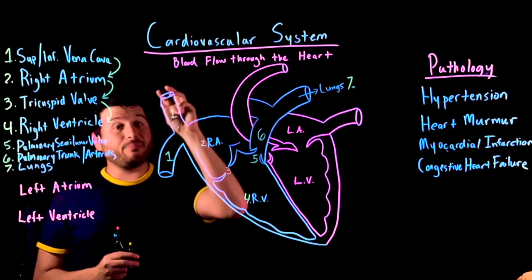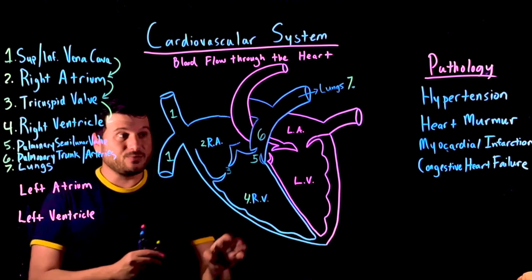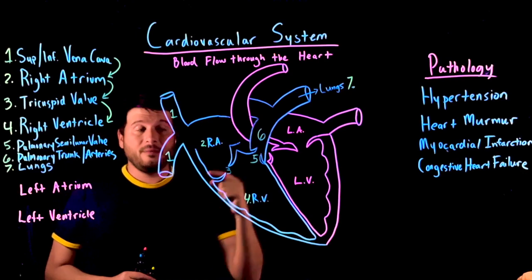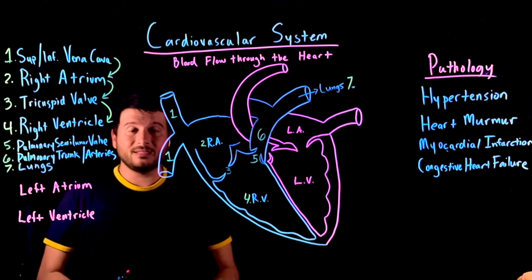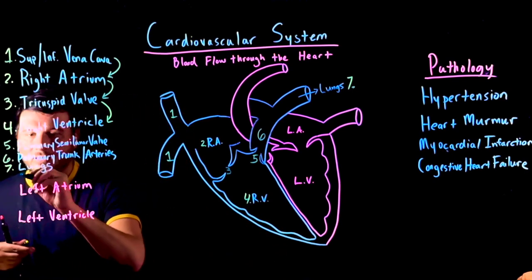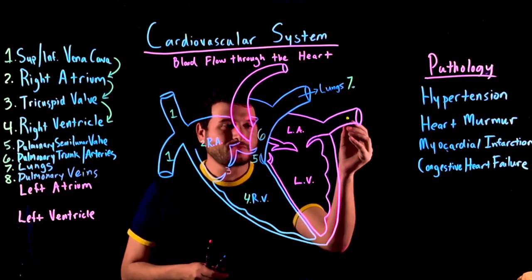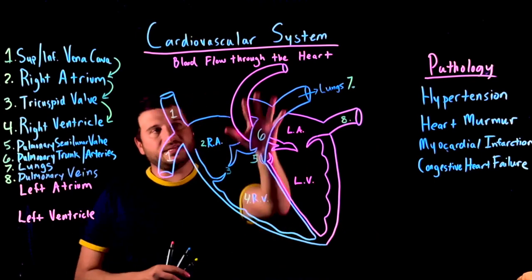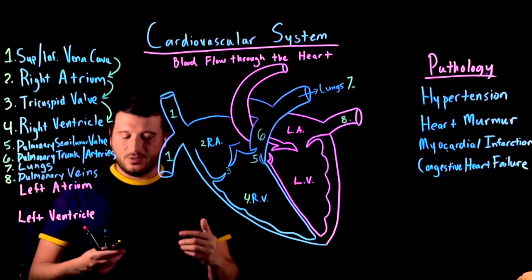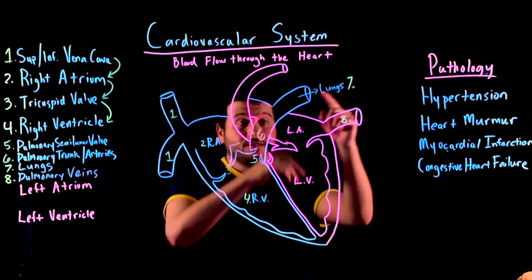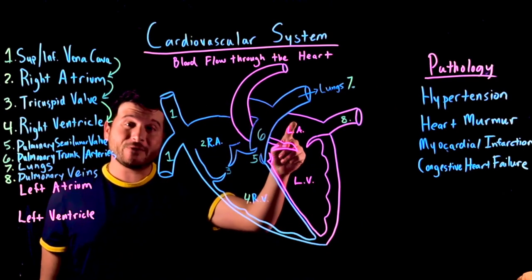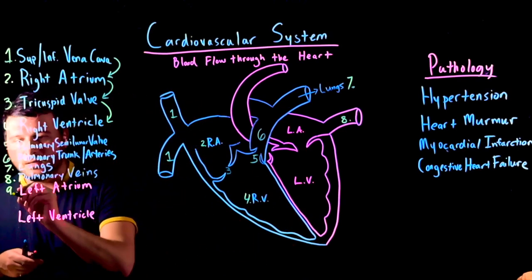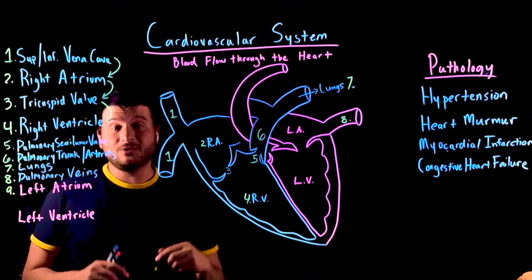So how do we get that blood back from the lungs to the heart? We haven't talked about the entire left side of the heart yet. We need to bring that oxygenated blood back to the heart, and the way we do that is through the pulmonary veins. This right here is the left pulmonary vein. There's also a right pulmonary vein hidden behind these vessels. The left and right pulmonary veins deliver blood to the left atrium, which receives freshly oxygenated blood from the lungs.